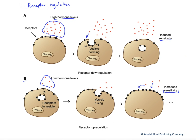Another mechanism of altering affinity is through local environmental changes like pH or temperature. And finally, we want to think of phosphorylation as another mechanism of turning cellular proteins on and off — and that includes receptors and their ability to bind hormones. Phosphorylation can be a mechanism of activating or deactivating receptors.